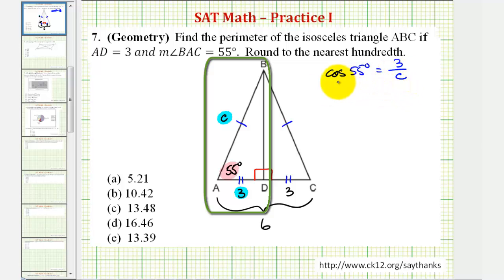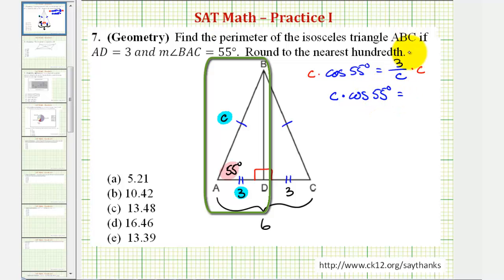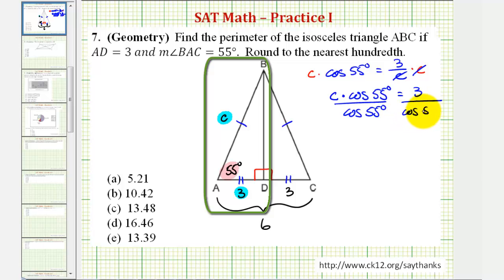To solve this equation for C, we'll clear the fraction by multiplying both sides by C. On the left side we have C times cosine 55 degrees, and on the right side C over C simplifies to one, so we have three. Now we'll divide both sides by cosine 55 degrees to determine the value of C. We will have to round C to the nearest hundredths, or two decimal places.